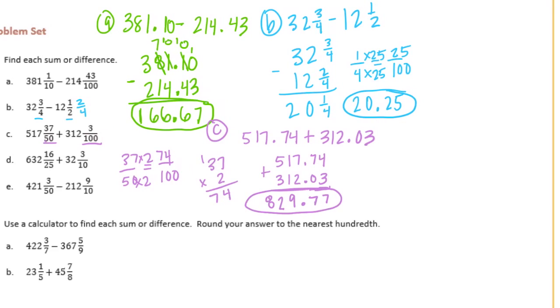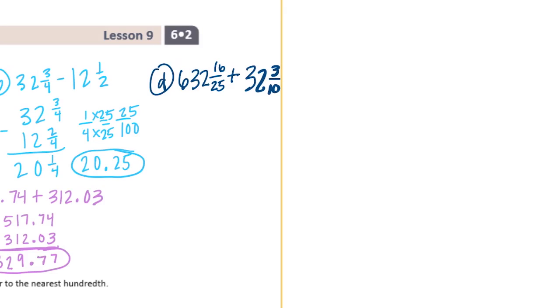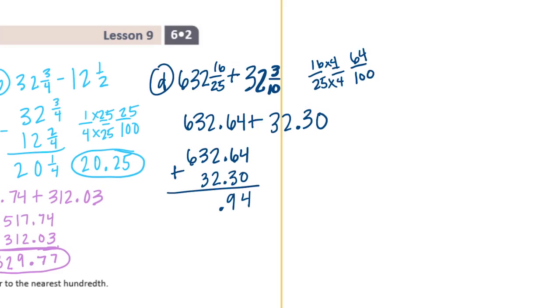Alright, d is 632 and 16 twenty-fifths plus 32 and 3 tenths. I can write it as 3 tenths as a fraction. So times 4, 16 times 4 is 64. So we have 632 and 64 hundredths plus 32 and 3 tenths. I can just write as 3 tenths, and since 64 hundredths goes to the hundredths place, I'm going to put a 0 there to make that into the hundredths place. So now let's add them. Really important, make sure that you line up your place values, because otherwise you'll be adding the wrong numbers and you'll for sure get the wrong answer. 664 and 94 hundredths.